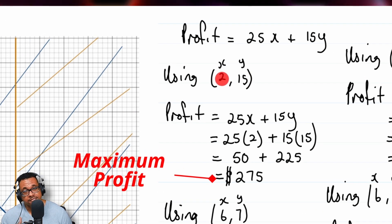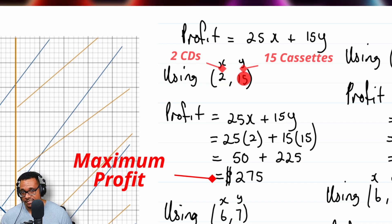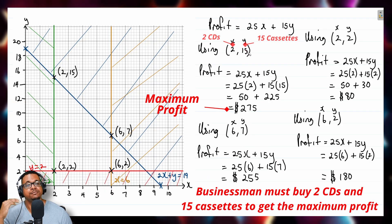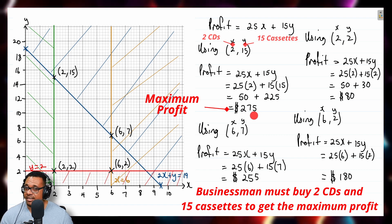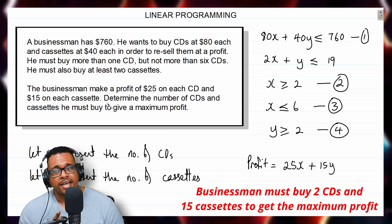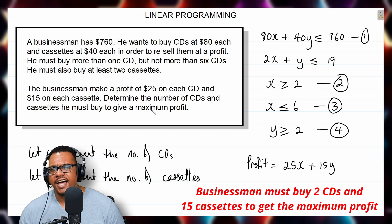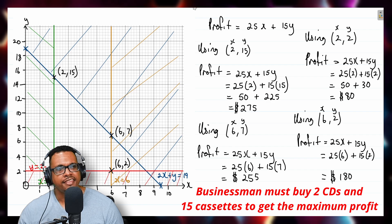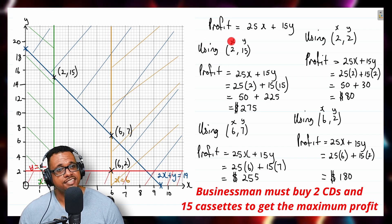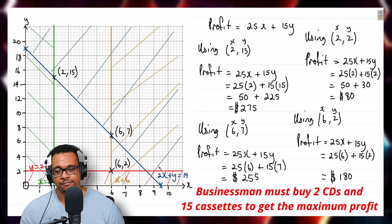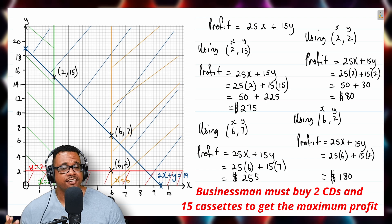Remember, x is the number of CDs and y is the number of cassettes, so that's 2 CDs and 15 cassettes. Going back to the question — determine the number of CDs and cassettes he must buy to give a maximum profit — the answer is 2 CDs and 15 cassettes, giving a maximum profit of $275. And that brings us to the end of this video.